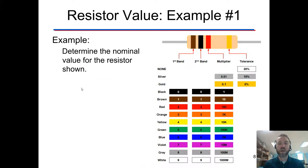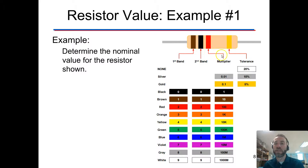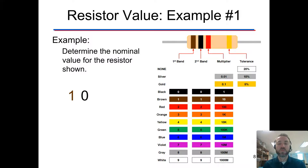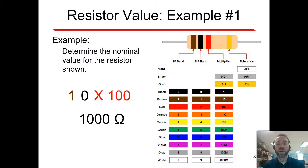Let's try one. Our first band is brown, second band is black, and our third band is red. So: first band is a one, second band black is a zero, and for our multiplier we have red — which is a hundred — so ten times a hundred, or a thousand ohms. But we're not going to write it like that — we're going to write it as one kilo-ohm.